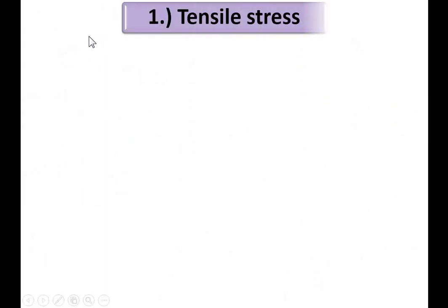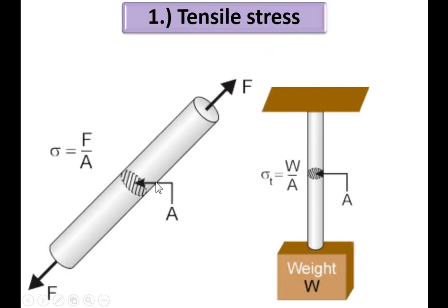Let's start from the first: tensile stress. From this figure, you can understand that if the load acting on the bar is a tensile force, the stress produced in the element is known as tensile stress. Here also, if the load is applied in the upward direction, then this bar is subjected to the tensile load and the stress produced in the material is known as tensile stress.